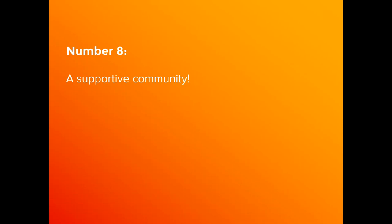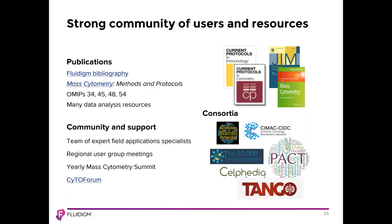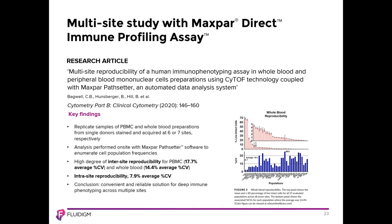Number eight is that mass cytometry has a supportive global community. Publications are available through the Fluidime bibliography, and many data analysis resources are available. Fluidime has a team of expert field application scientists ready to provide direct support, with additional support available at regional user group meetings and annual mass cytometry events. The data from the six-site study using the Maxpar Direct Kit, which Sean will use to demonstrate manual analysis in FCS Express, really emphasizes the high data quality of this platform.